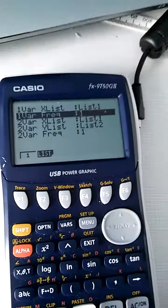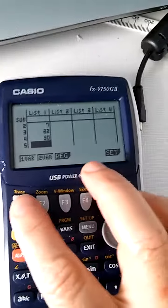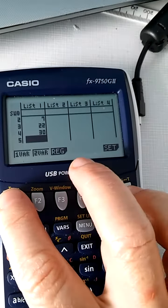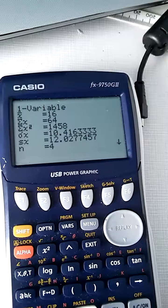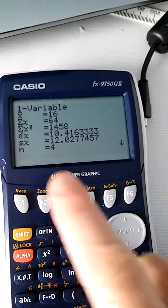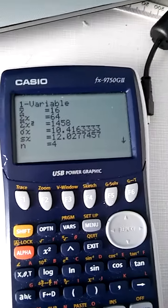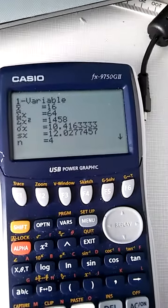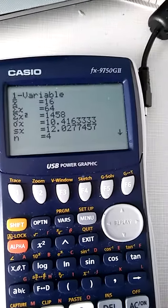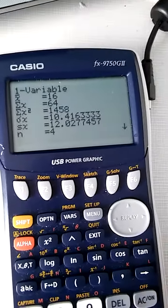Now we can press one variable and look for the standard deviation. If we see here, the one that says sigma x, that's a population standard deviation, and sx is a sample standard deviation.